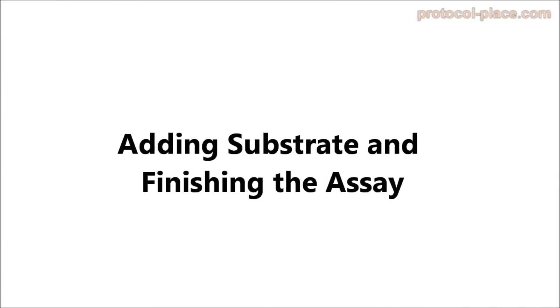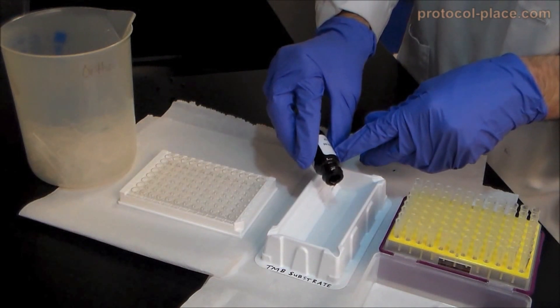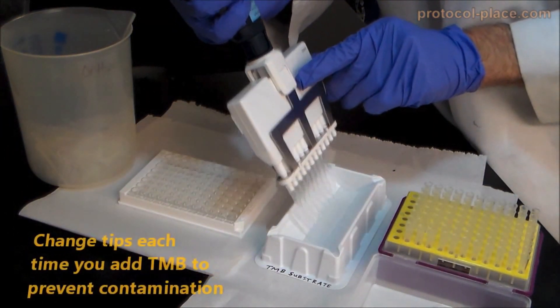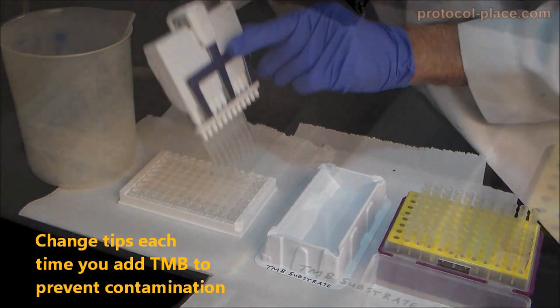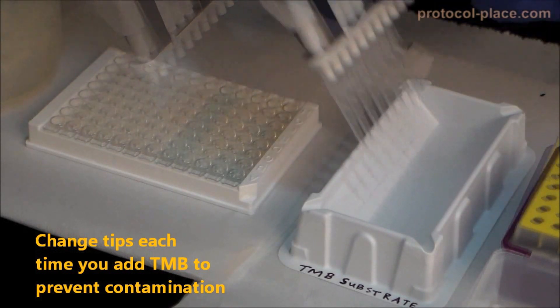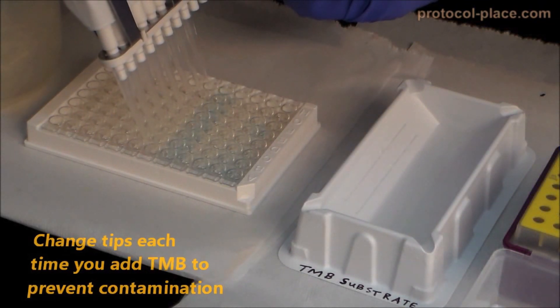Adding substrate and finishing the assay. Once the ELISA plate has been washed and emptied for the last time, the next step is to add a clear, colorless substrate such as TMB to the ELISA plate. The substrate will be converted to a colored chemical by any enzyme conjugates bound to the ELISA plate.